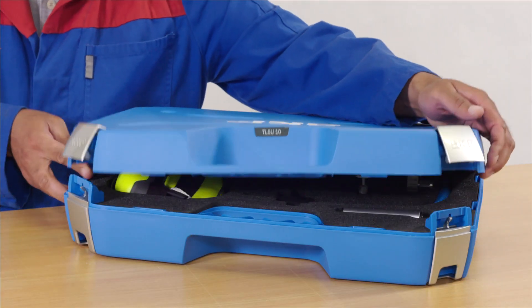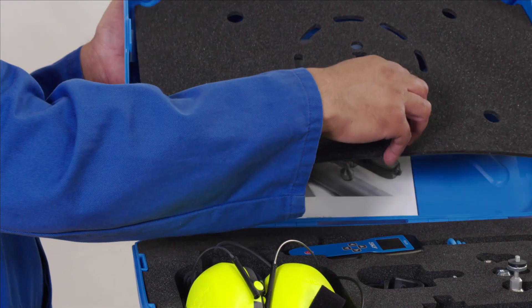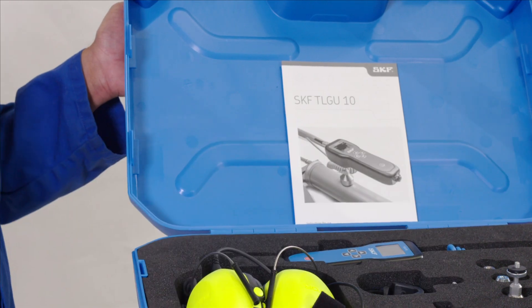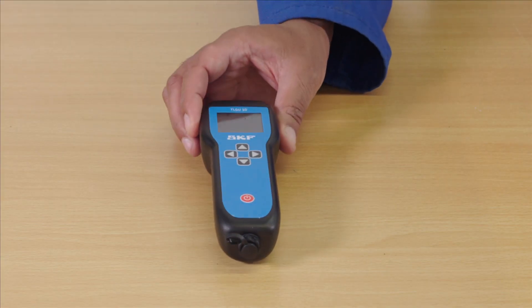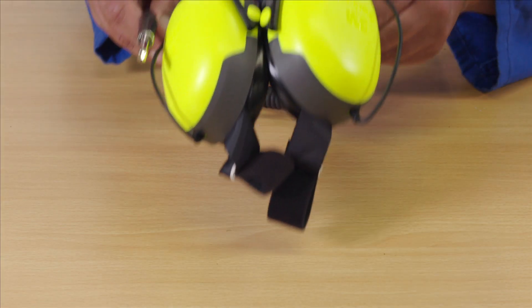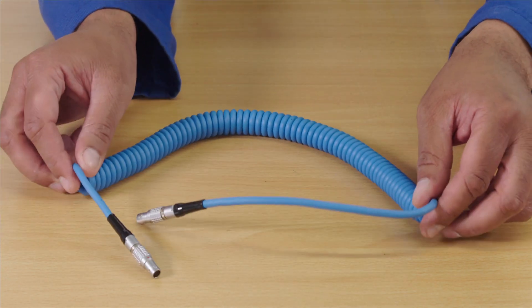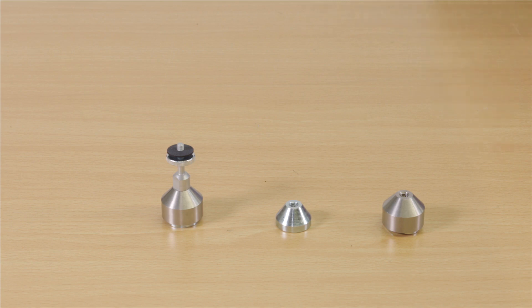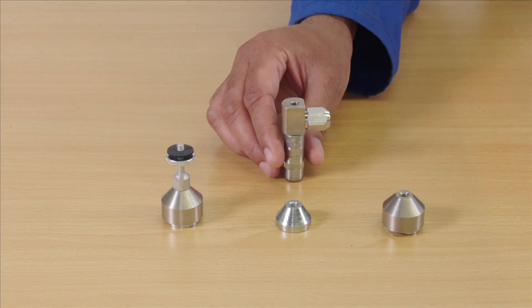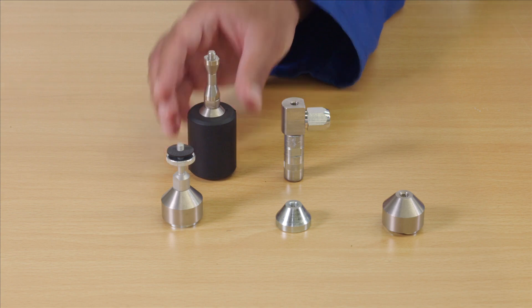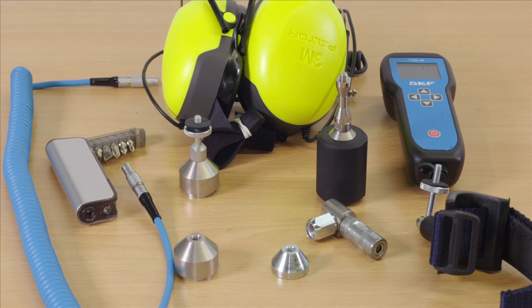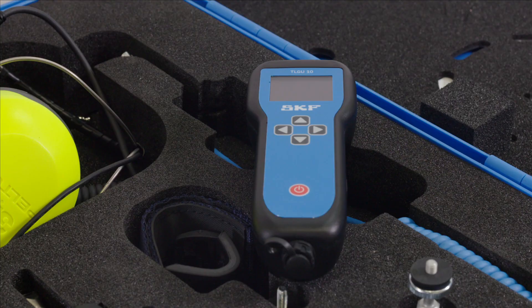The TLG-U10 is supplied as a kit which includes a user manual, the TLG-U10 handset, neckband headset, sensor cable, flat and curved magnetic mount and adapter, ultrasonic lubrication probe along with Velcro and magnetic cradles, batteries and screwdriver.